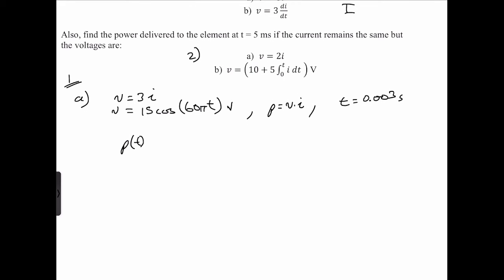We then go ahead and say p of t is equal to 15 times 5, that's going to be 75 cosine squared. And that should be in watts. So that's the expression for the power. If we evaluate p of t at 0.003, we get 53.48 watts.